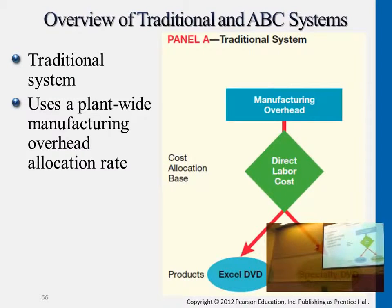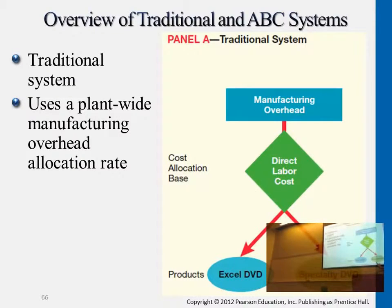But what if it's not? For example, a specialized DVD may require special machines, but you're not capturing machine information here if you're using the direct labor cost. Perhaps the direct labor cost incurred for these two jobs is the same, but machine-wise, you're using specialized machines, and this is not captured in this diagram.